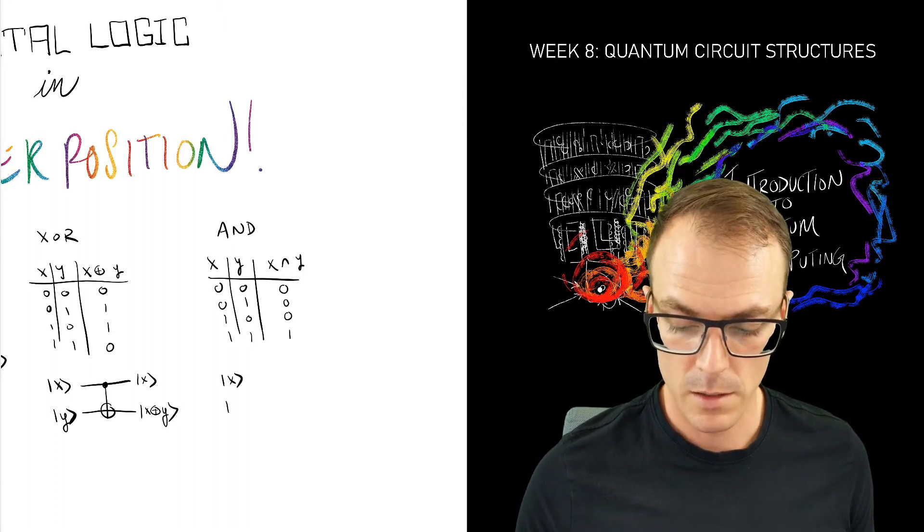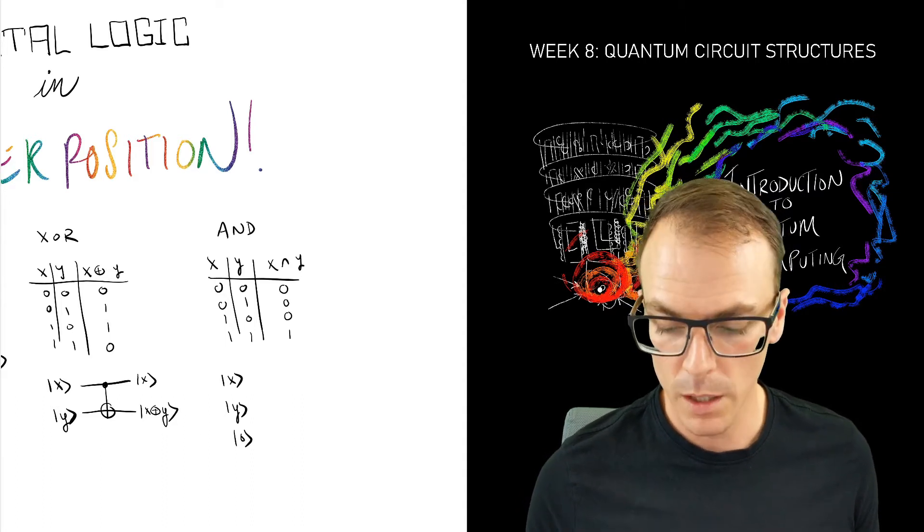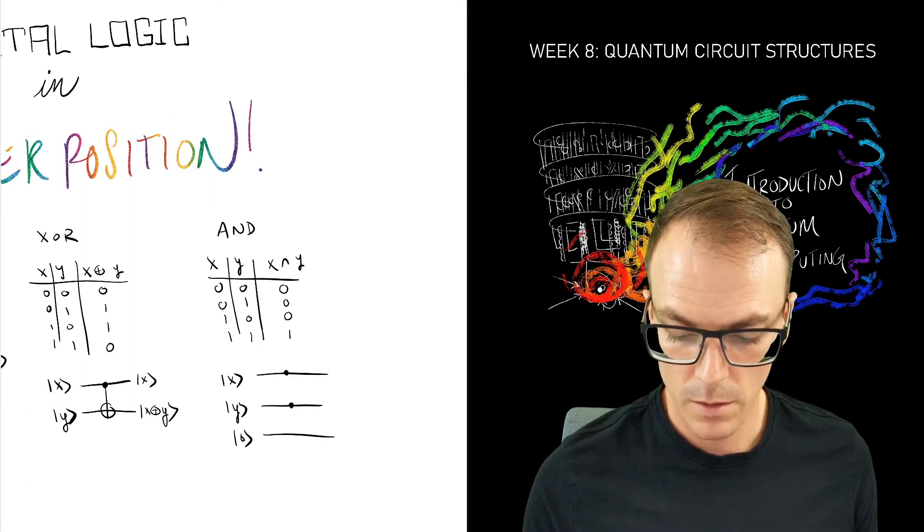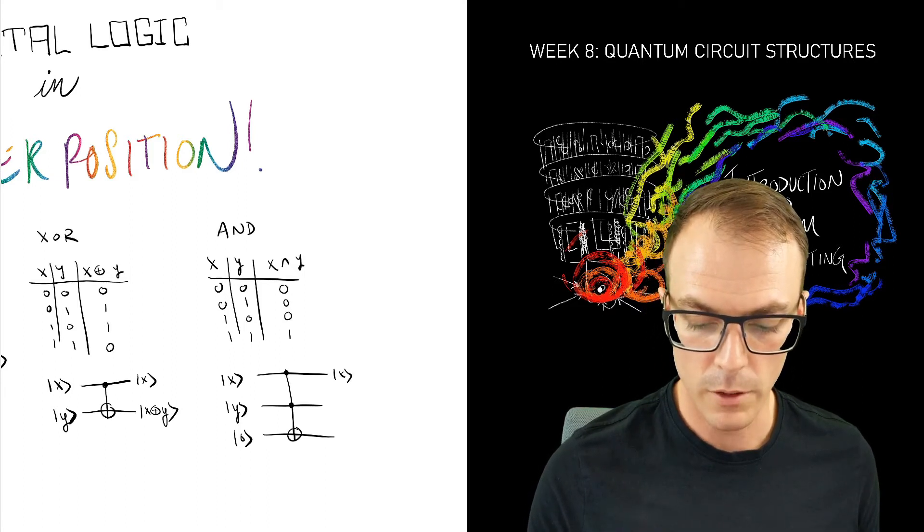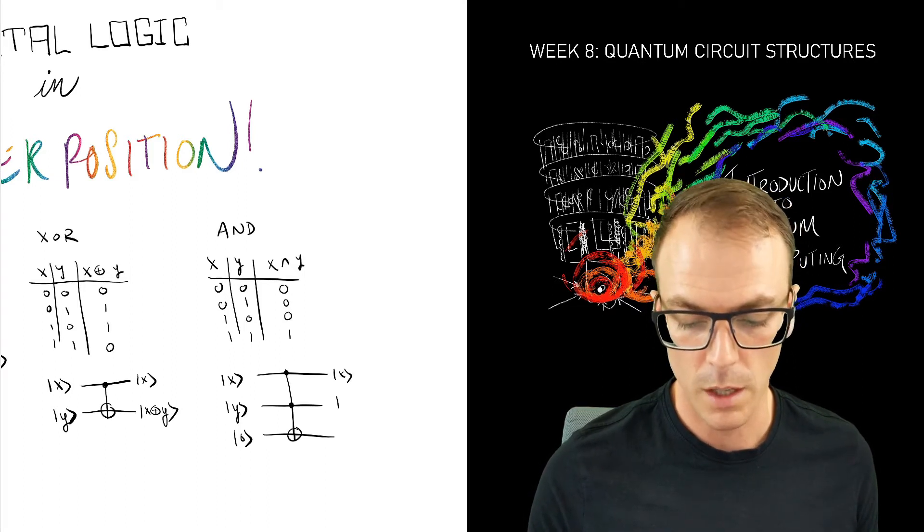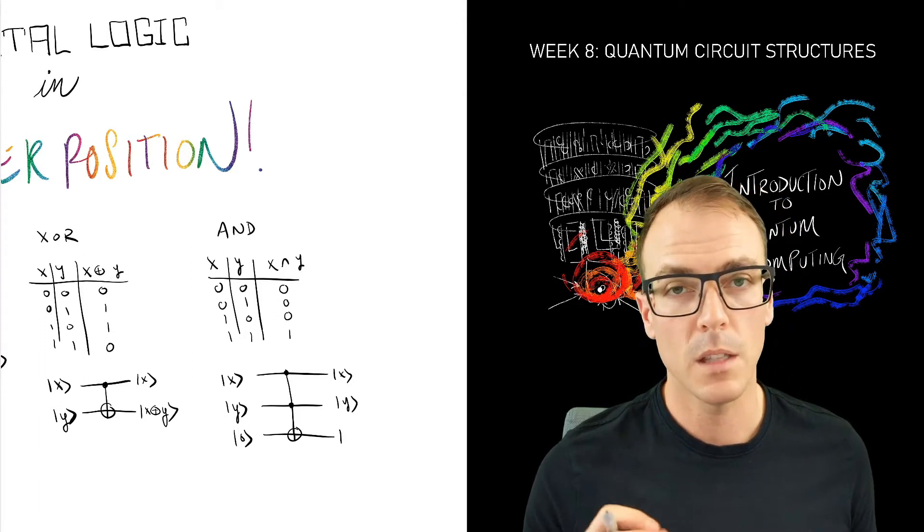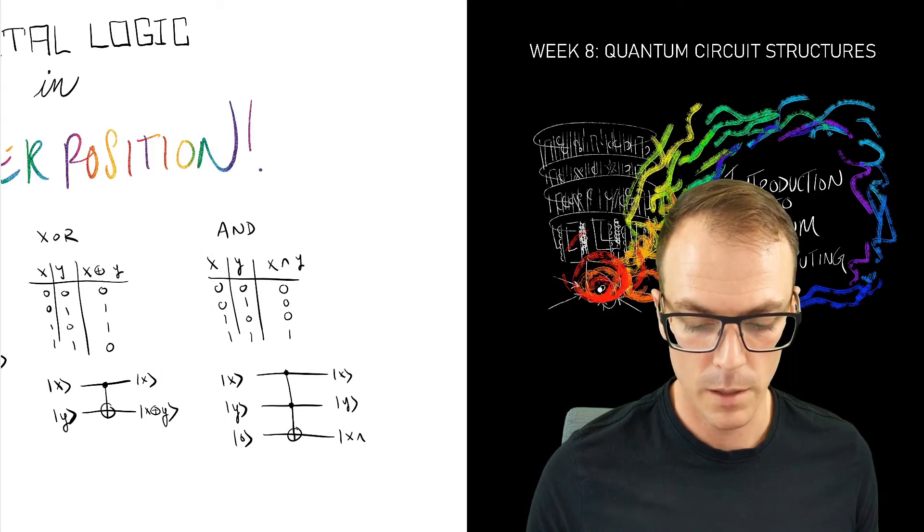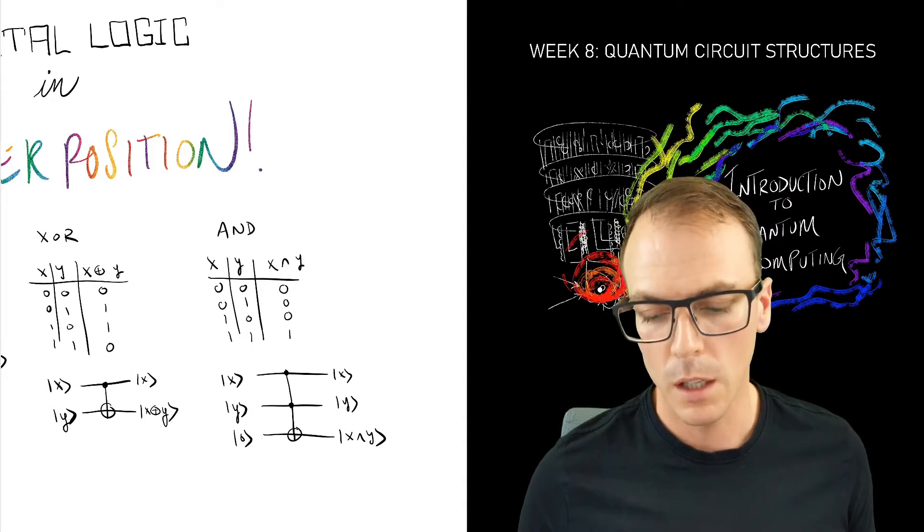So we had X, Y, and then a place to store the output—this is our work qubit from the last video—and we had this Toffoli or controlled-controlled-NOT gate. It copies the input bits and puts the output in this last or this new qubit register.